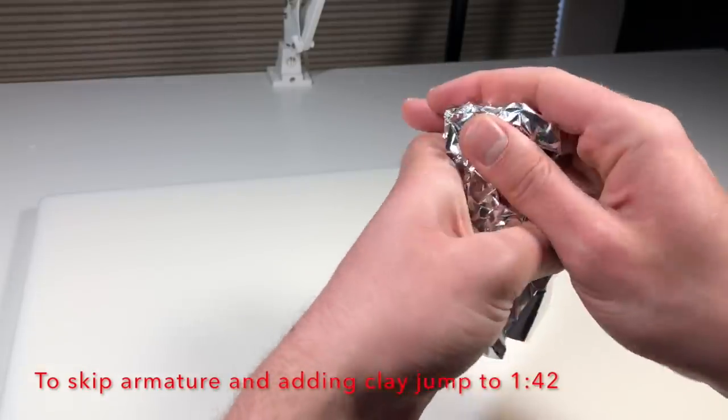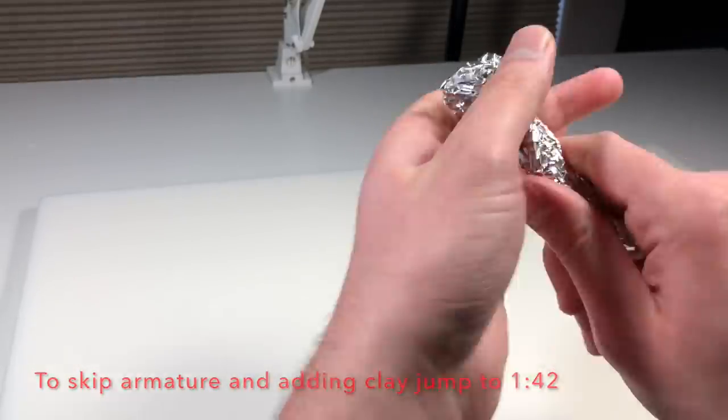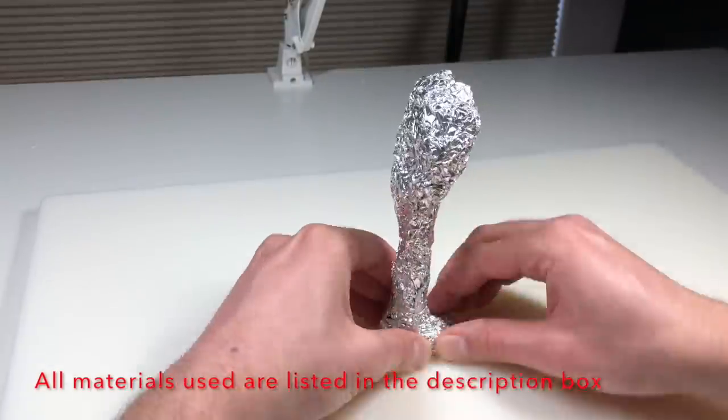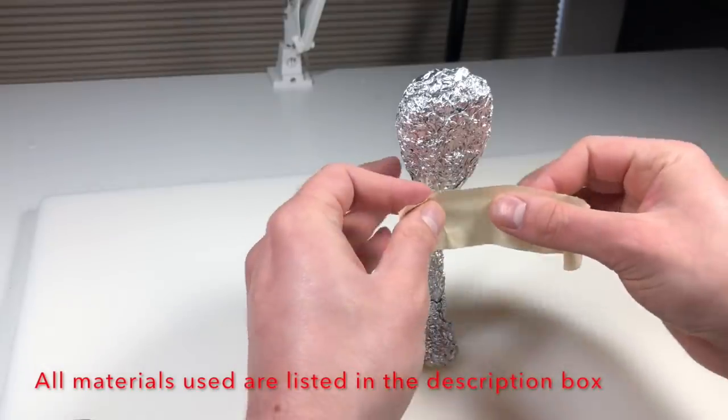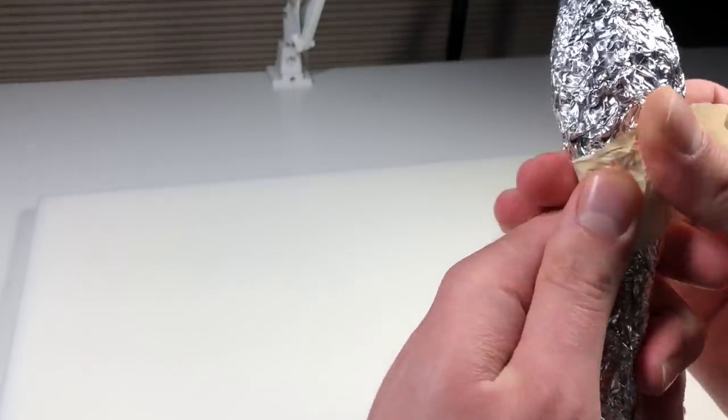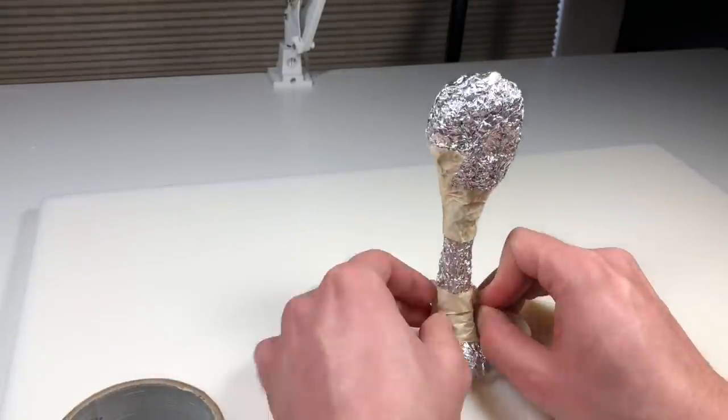I'm making the torso, legs, feet, and everything out of one piece of aluminum foil. As always, all the materials and tools that I use in this video are listed in the description box below along with my affiliate links if you'd like to purchase anything. Now we're just holding all of that aluminum foil together with some masking tape.